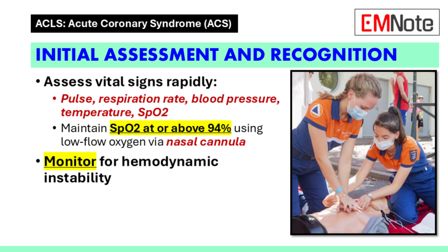Vital signs must be assessed quickly. This includes measuring the pulse, respiration rate, blood pressure, temperature, and oxygen saturation. Oxygen saturation should be maintained at or above 94%. If needed, administer supplemental oxygen using a low-flow nasal cannula. Monitoring for signs of hemodynamic instability is critical during this phase.